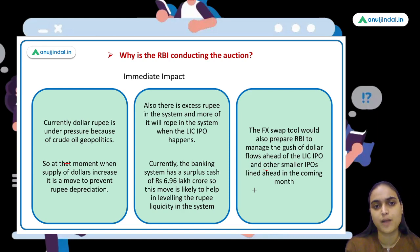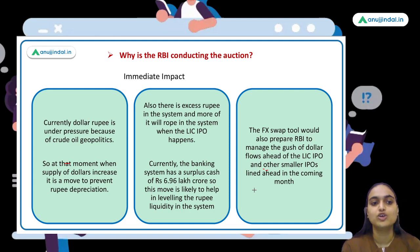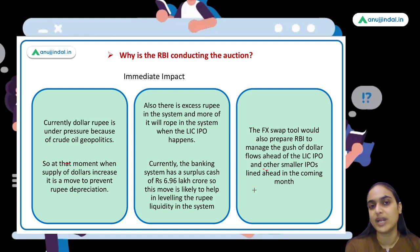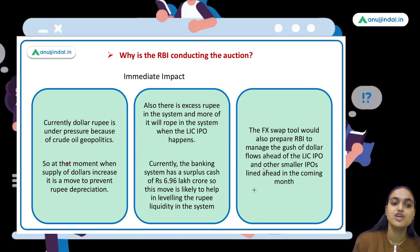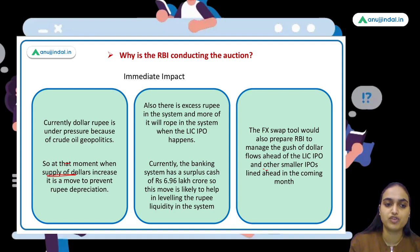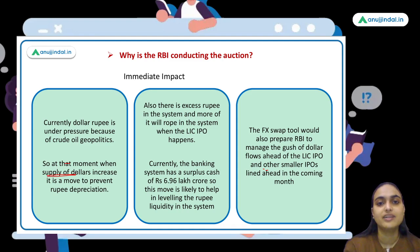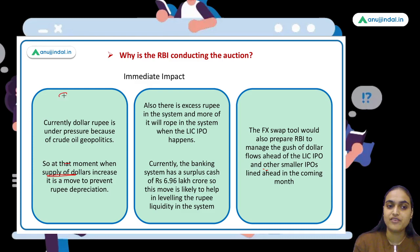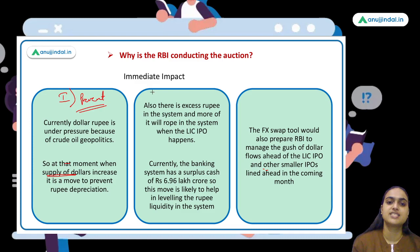Why is RBI conducting these sell-buy swap auctions? First, the dollar-rupee is under pressure and we want to prevent the rupee from further depreciating. When RBI supplies more dollars into the market, it helps prevent the dollar from appreciating and the rupee from depreciating. So one key reason is that RBI wants to prevent further depreciation of the rupee.